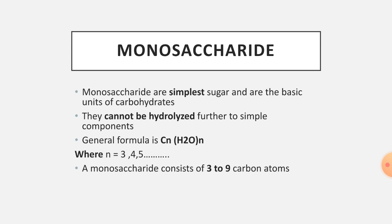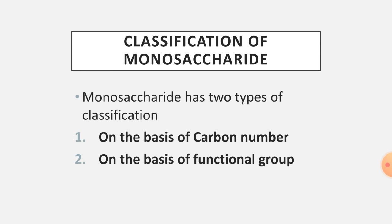Monosaccharides cannot be hydrolyzed further into simpler components. Hydrolysis means splitting in the presence of water. When carbohydrates are fully broken down they yield carbon dioxide and water (combustion products), but monosaccharides do not yield a smaller sugar unit upon hydrolysis. Their general formula is Cₙ(H₂O)ₙ, where n takes values of 3, 4, 5, and so on. A monosaccharide consists of 3 to 9 carbon atoms.